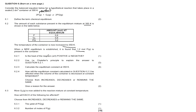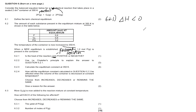Question 6.2.1 asks: is the enthalpy change positive or negative? We know that an increase in temperature always favors the endothermic reaction. Since the reactants are increasing, the reverse reaction is the endothermic reaction, which means the forward reaction is exothermic. Our enthalpy change always represents the heat of reaction for the forward reaction, so ΔH is less than zero.